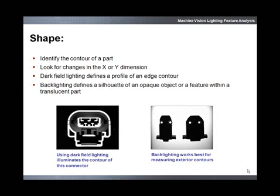Identifying the shape or outline of a part is a very common application. There are two basic lighting techniques that can produce this result. Front lighting a part with a dark field illuminator will produce an outline of the shape of the feature. Back lighting a part with a diffuse backlight will produce a silhouette of the shape of the feature. Choosing between these techniques should be based on the feature of interest. A backlight can produce nice sharp edges, but typically only the outside edges of a part are available.